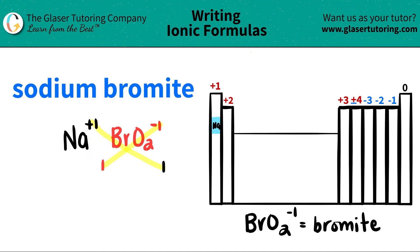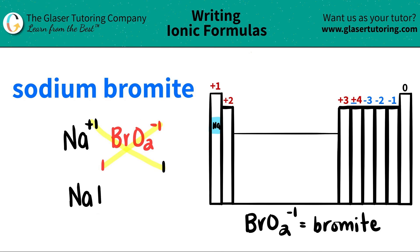But when you crisscross, just remember that the charges kind of vanish — we're just using them as numbers. So we have sodium, Na, and we have one of them. You can put the one, but technically you don't need to. And then since we only have one of the bromide, I don't need to write down anything except for the polyatomic as well.